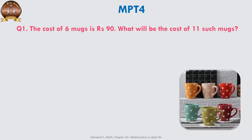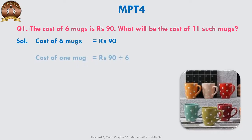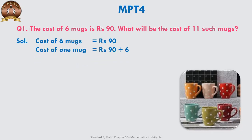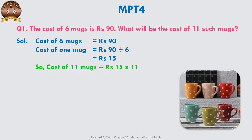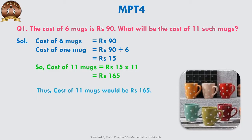The cost of six mugs is ₹90. What will be the cost of 11 such mugs? Whenever more quantity is given and we have to find for less, we divide; when we have to find for more, we multiply. Cost of six mugs is ₹90, so cost of one mug = ₹90 ÷ 6 = ₹15. Cost of 11 mugs = 15 × 11 = ₹165. Thus, cost of 11 mugs would be ₹165.